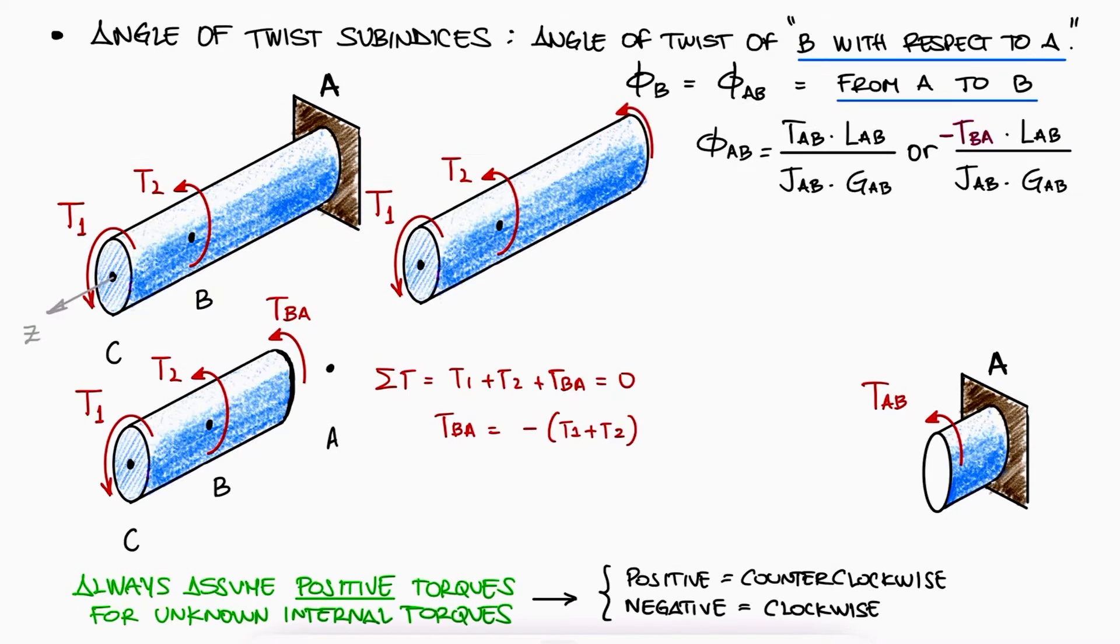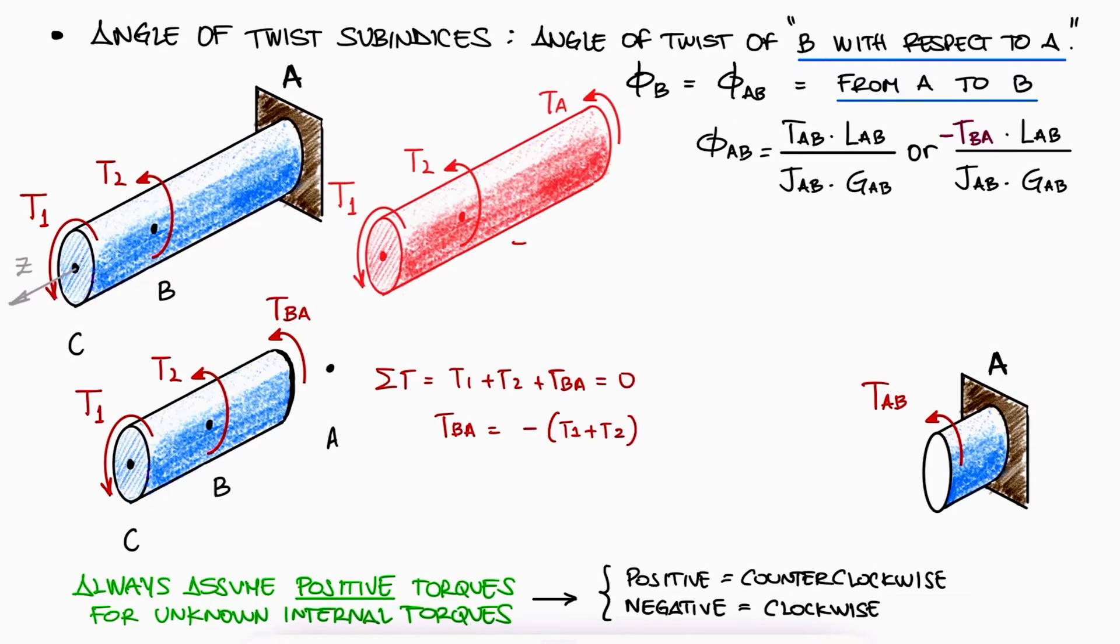We take a free body diagram of the entire rod and solve for TA, the reaction at the wall. And again, we assume TA to be positive since it's also an unknown torque.